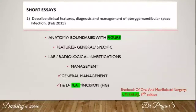Both general and specific features need to be listed. General features — for example, fever, chills, malaise, lethargy — are general features of any space infection. You also mention features specific to that particular space. Lab and radiological investigations include blood culture and sensitivity, hemogram, and imaging techniques like CT and MRI.